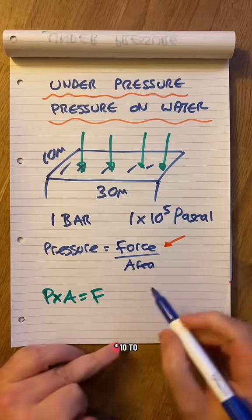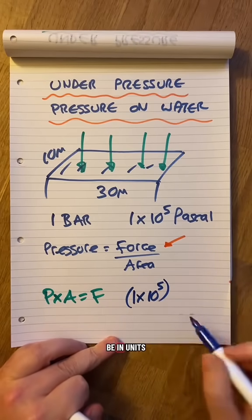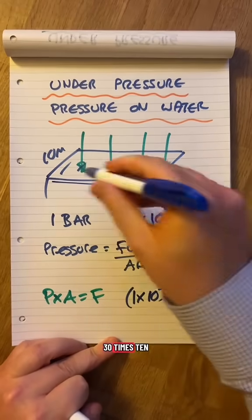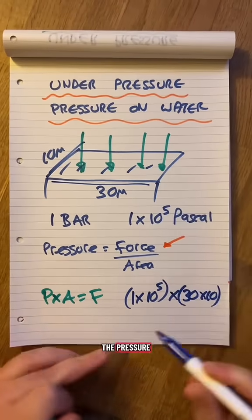We know the pressure is 1×10^5 pascal - you've got to be in units. And the area is 30 times 10 which is 300. That gives us the force.